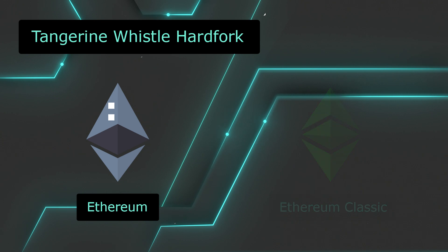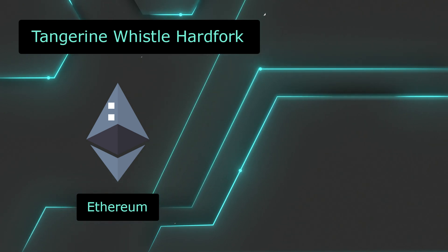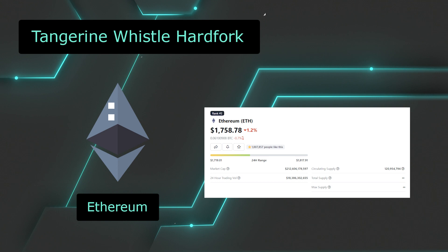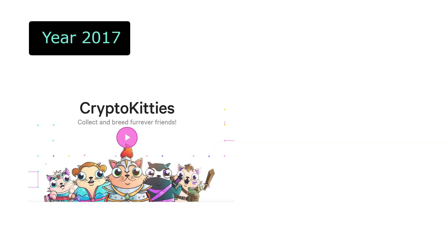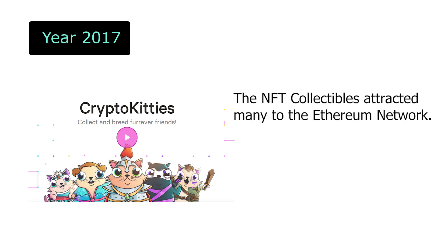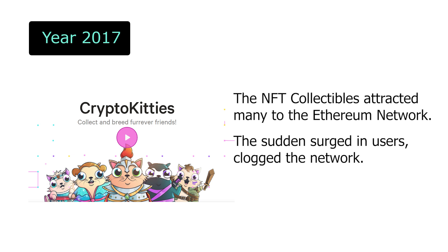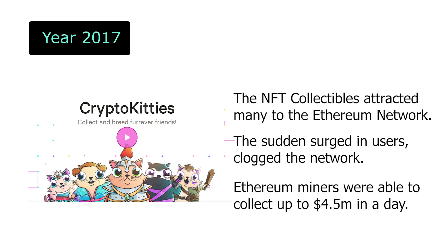Nonetheless, the DAO event did not stop Ethereum from becoming a blockchain network worth hundreds of billions of dollars today. In November 2017, a collectible game known as CryptoKitties was launched — considered the first decentralized application on Ethereum to gain real user traction. The high volume of transactions clogged the Ethereum blockchain, causing users to wait days for transaction confirmations. The highest fees collected by Ethereum miners during that time reached $4.5 million in a single day.